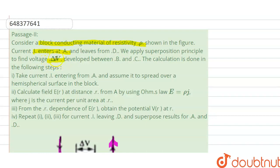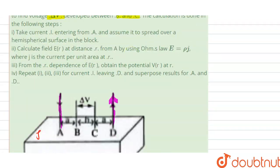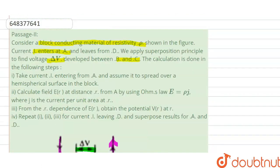Next it is saying that we apply superposition principle to find the voltage difference, that is del V, developed between B and C. What amount of voltage difference develops between point B and point C? This potential difference is found using some process given here.